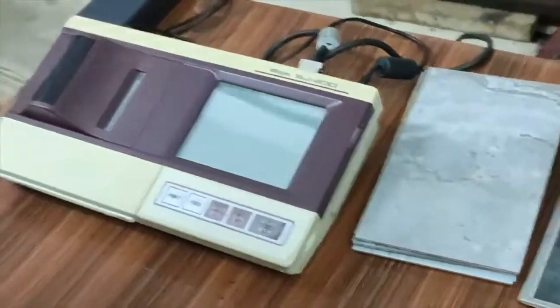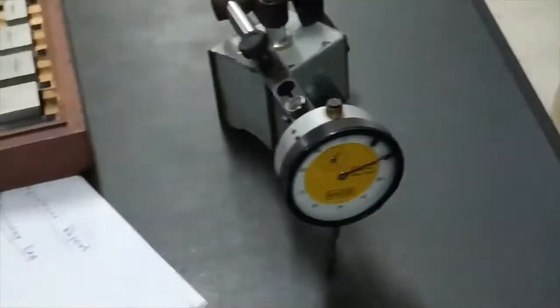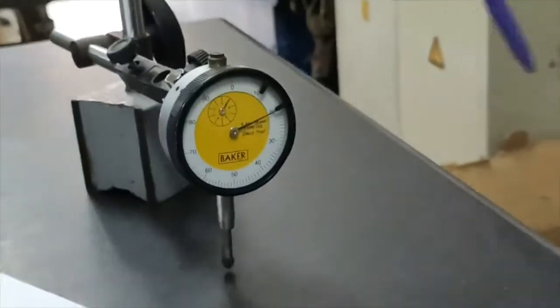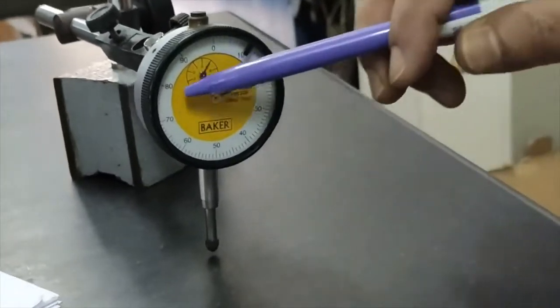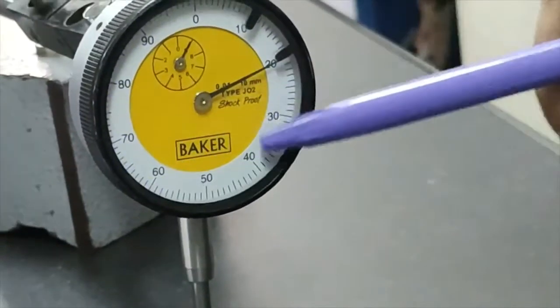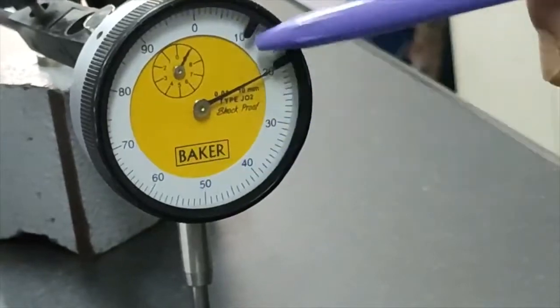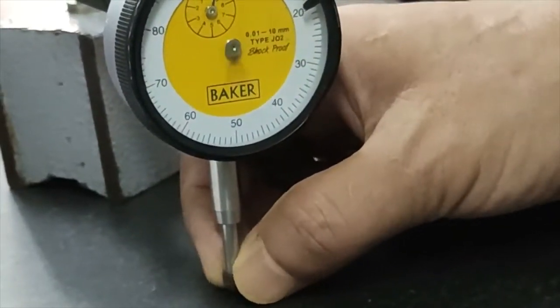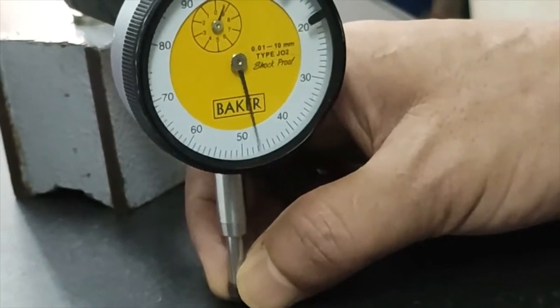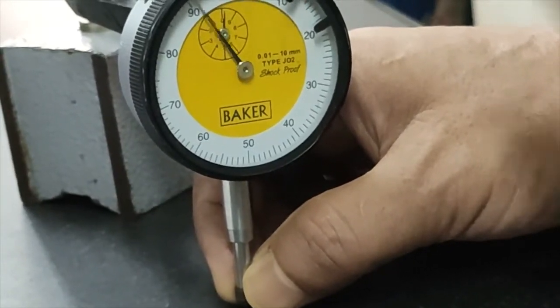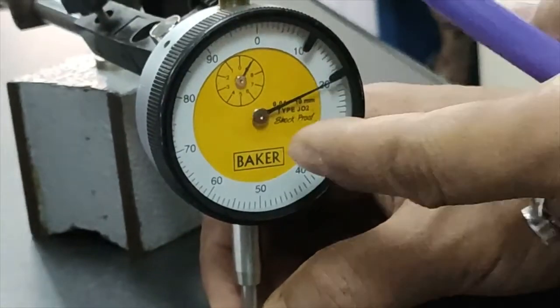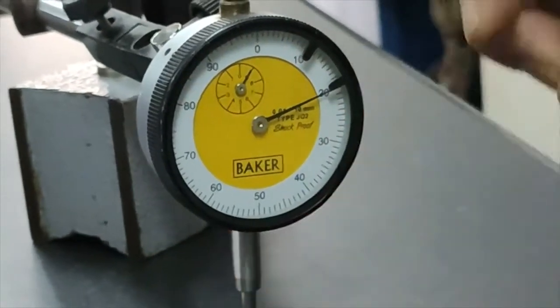Now first come to dial indicator calibration. We have one dial indicator with 100 divisions gradation and this is the plunger. You can lift it out. If you lift 1 mm it will complete one round rotation. So 1 mm by 100 divisions gives 0.01 mm as the least count.